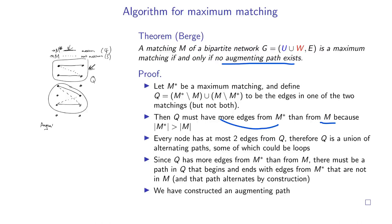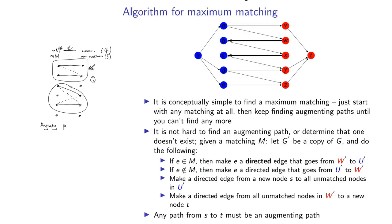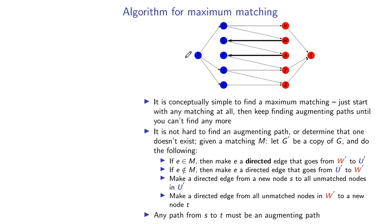The natural follow-up is: what is the actual algorithm? You'd just start with any matching and keep finding augmenting paths until you can't anymore. To find augmenting paths, orient all matched edges right-to-left and all unmatched edges left-to-right. Then add a source vertex S connected to all unmatched left vertices, and a sink vertex T connected from all unmatched right vertices. Finding an augmenting path is now equivalent to finding a path from S to T in this directed network.